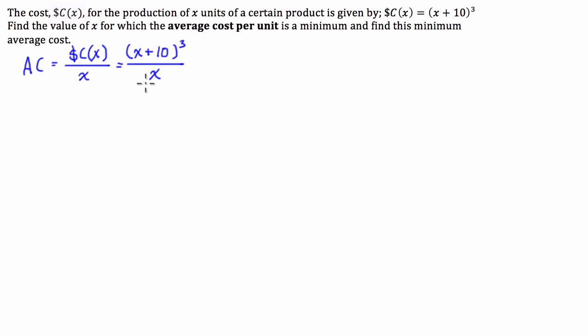So to find the minimum average cost per unit, what we're going to have to do is we're going to have to differentiate the average cost function and find where it's at a turning point.